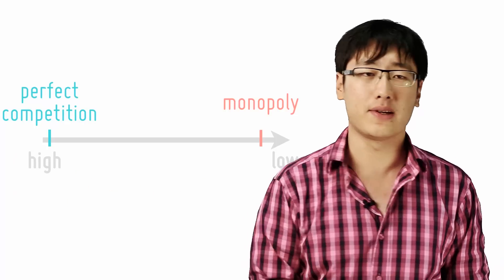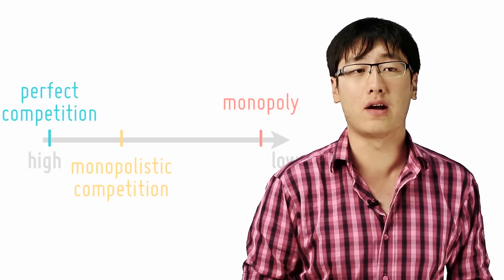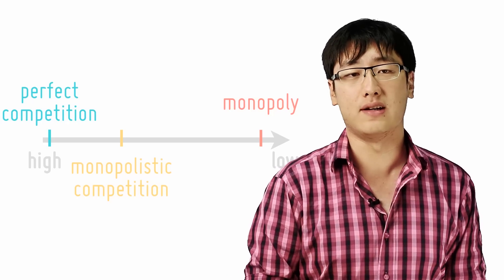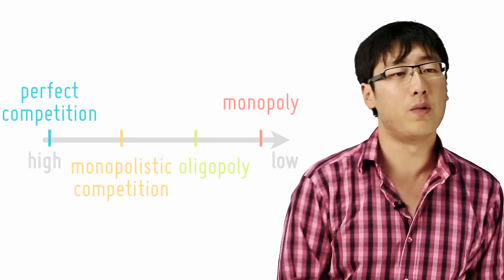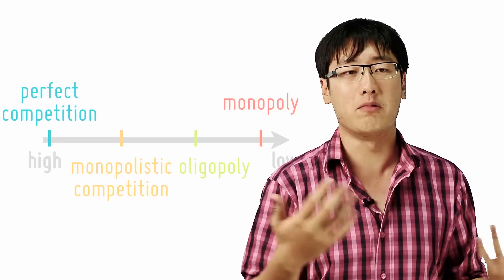So in the middle comes monopolistic competition which involves quite a lot of competing, quite a lot of freedom for new firms to enter the industry, and oligopoly, more towards the monopoly side where there are a few firms and entry of new firms is actually quite restricted.